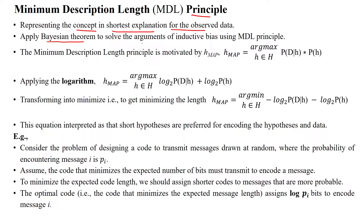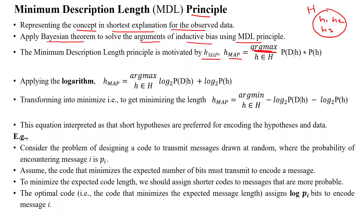We can apply Bayes' theorem to solve the arguments of inductive bias using the Minimum Description Length principle. The MDL principle is motivated by the maximal a posteriori (MAP) hypothesis. The MAP hypothesis is derived from the hypothesis space, which contains n number of candidate hypotheses. From these candidates, the MAP hypothesis is selected by calculating the probability of data given hypothesis, multiplied by the probability of hypothesis.